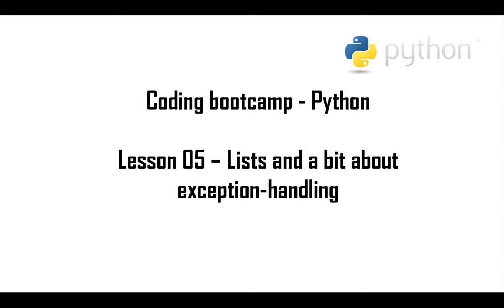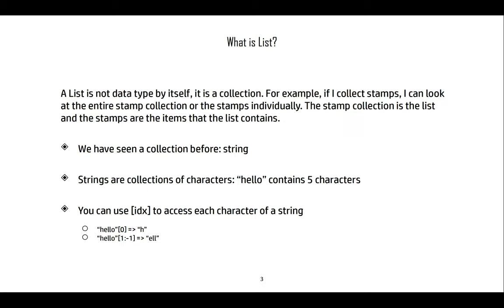Today we are going to explore lists and a little bit about exception handling. The list type is not a data type per se — it's what we call a collection. Take the example of a stamp collection: you can look at the entire collection or at stamps individually. Each stamp is part of the collection, but the collection itself is no specific item. The stamp collection is the entire list and the stamps themselves are the list items.